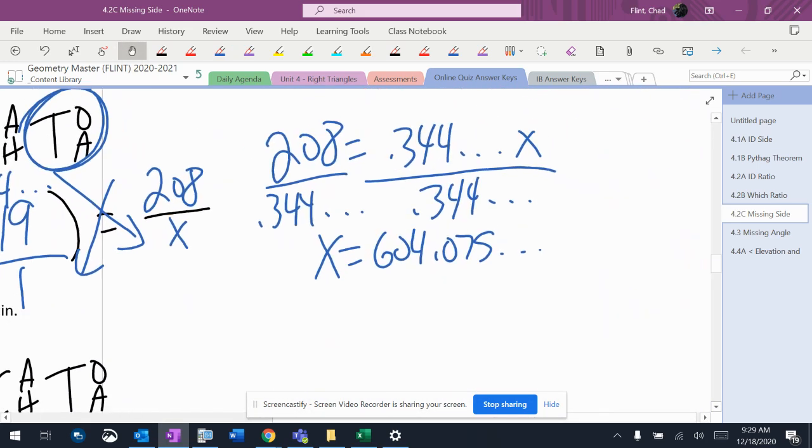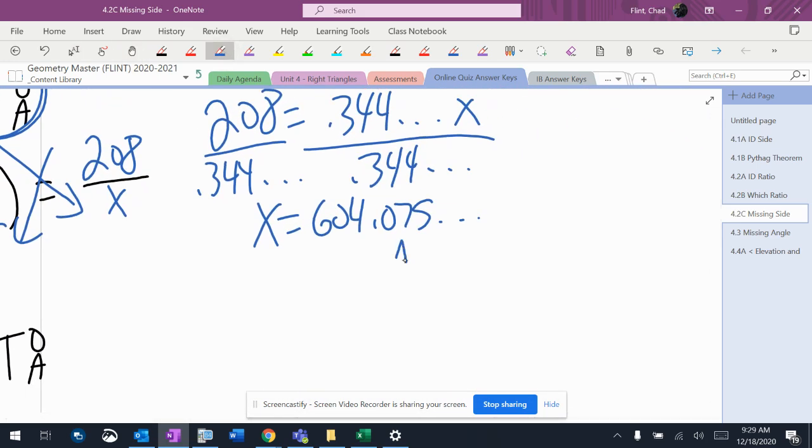It says nearest hundredth, so I'm rounding the seven using the five. So it's 604.08.